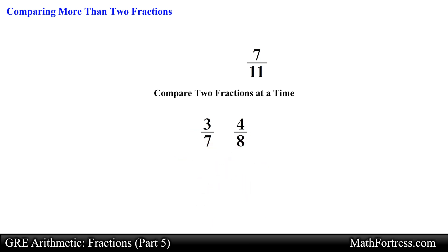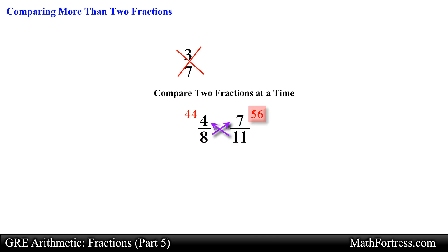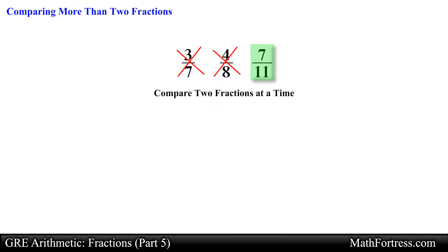We can now eliminate the first fraction since we concluded it was smaller than the second. Now we go ahead and compare the second fraction with the third fraction. Same process — we multiply the denominator of one fraction with the numerator of the other to get new numerators for comparison. Carrying out the products we see that the third fraction is larger than the second since 56 is greater than 44. So we conclude that the third fraction is the largest of the three.